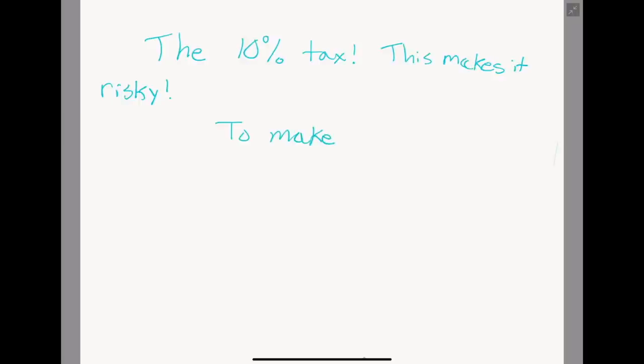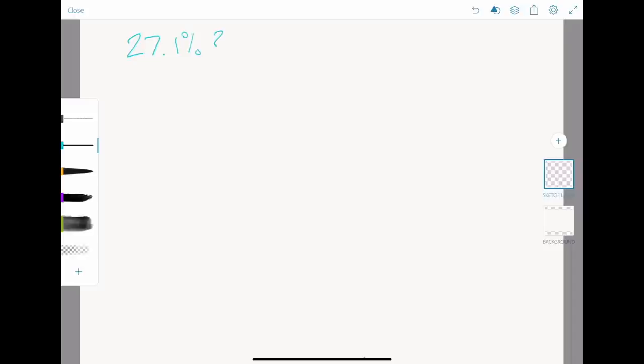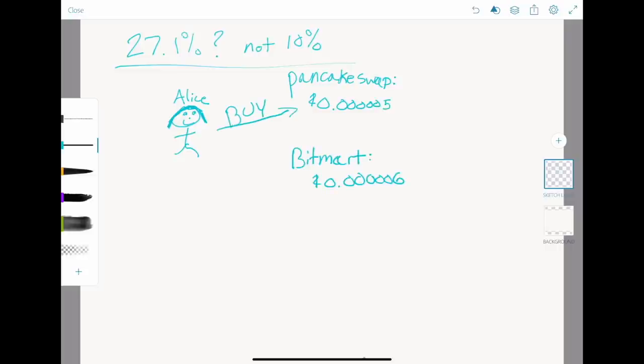In order for an actor to make money, the difference in price between the exchanges needs to be 27.1% higher than the exchange they buy from, and I am excluding network fees as they become obsolete with large transactions. Why 27%? Isn't it 10%? Well, let's see. Let's see if Alice will make money buying SafeMoon on PancakeSwap for $0.00005 and selling it on BitMart for $0.00006.